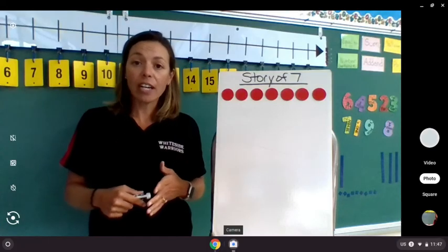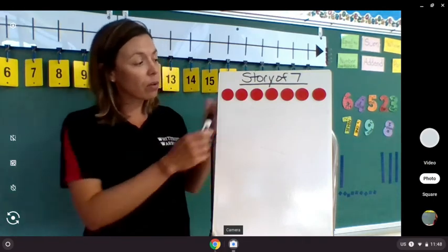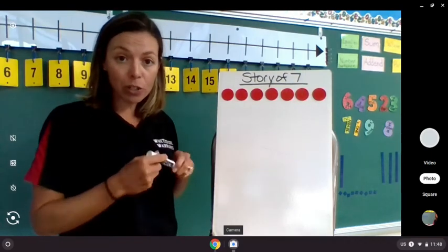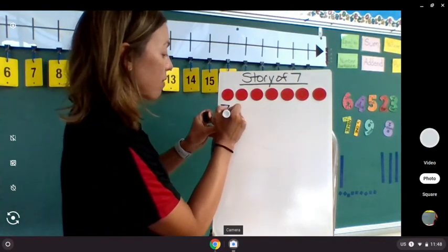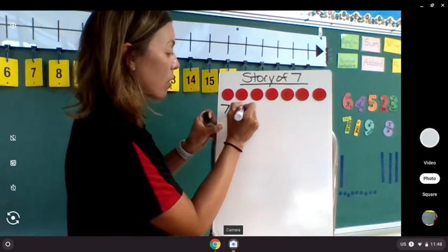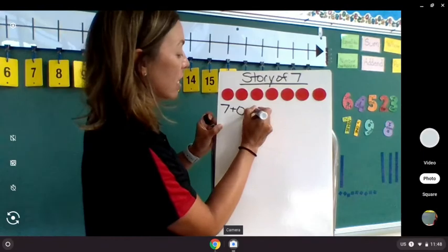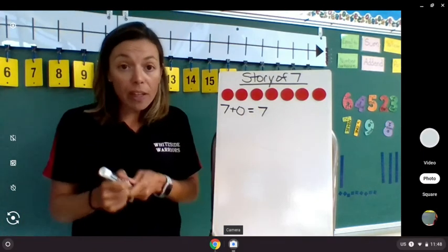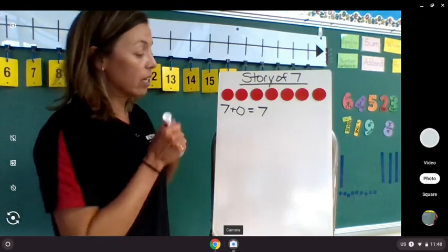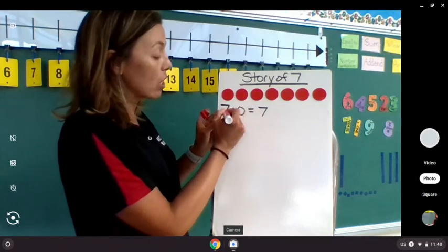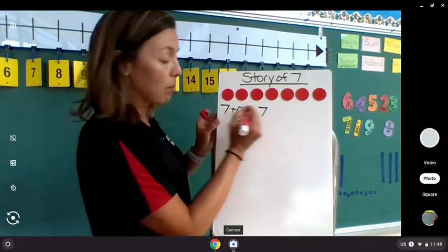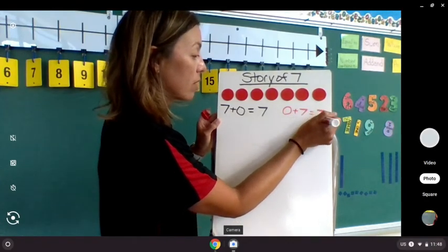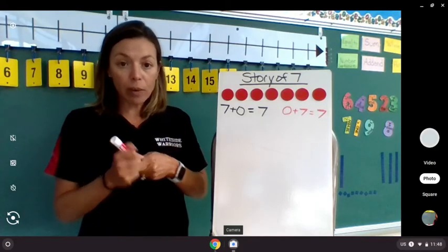Now we are going to take a look at ways to make 7. So if we start and we have 1, 2, 3, 4, 5, 6, 7 red counters, we can make our first number sentence: 7 plus 0, 7 counters plus 0 more counters, gives us a total of 7. Now we know that we have turnaround facts. So we can take a look at this number sentence and let's turn it around and flip-flop these numbers. That gives us 0 plus 7 equals 7. So we have our turnaround fact.